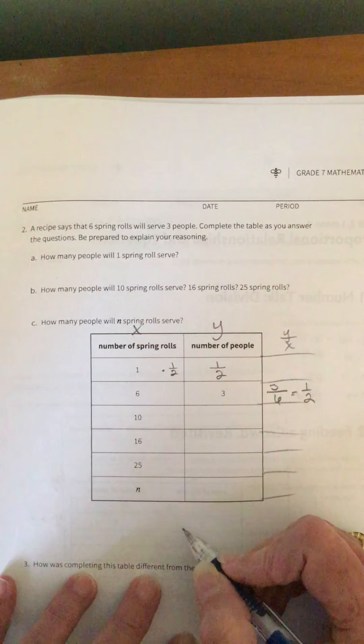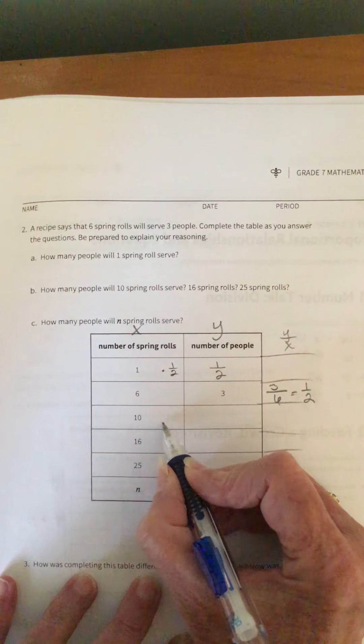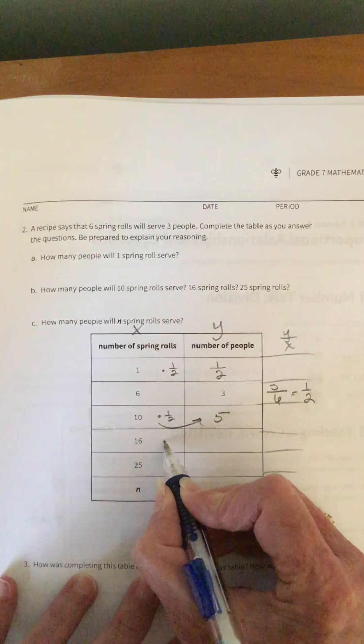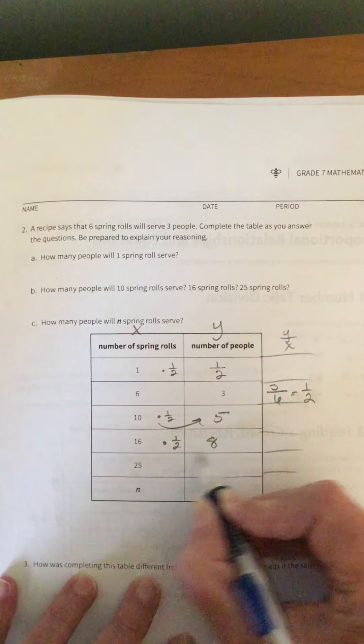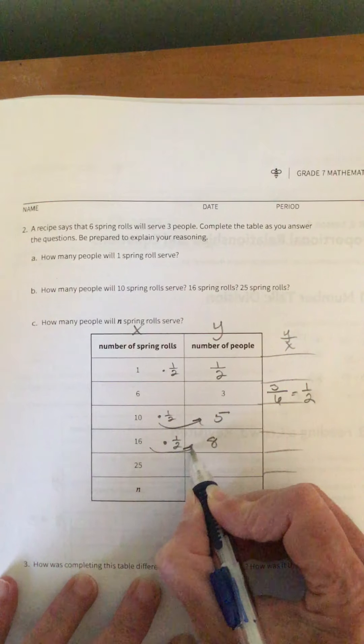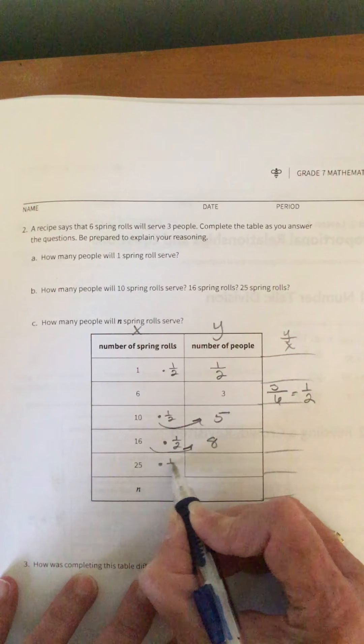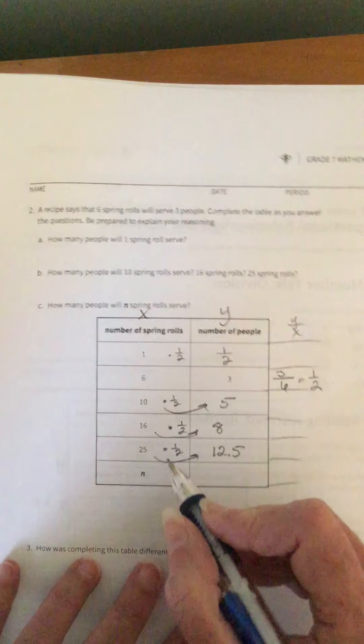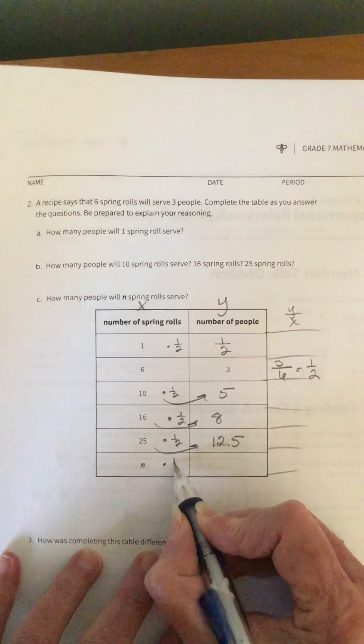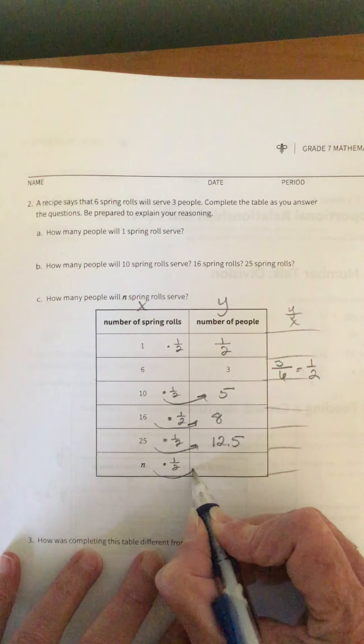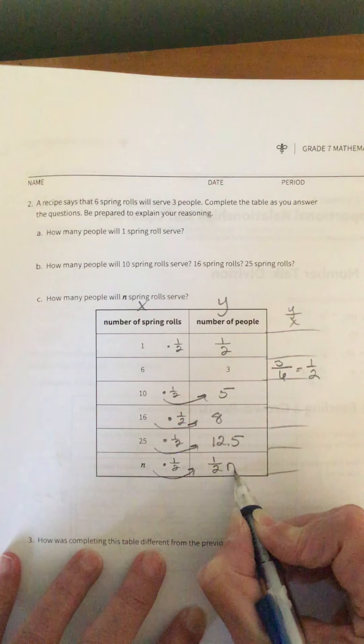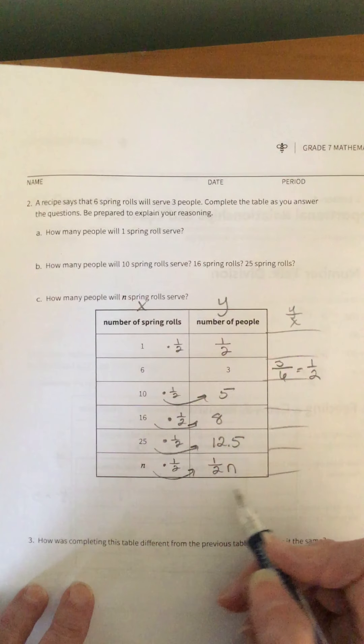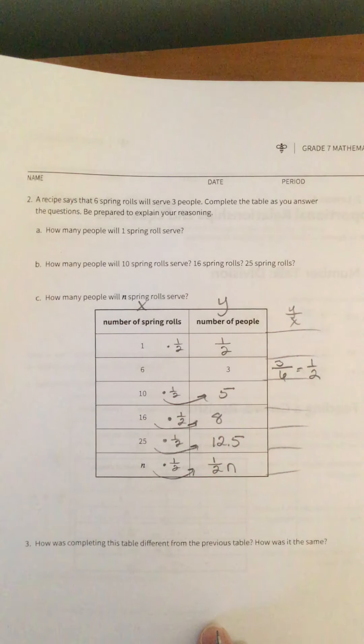Alright, so I'm given this relationship right here. So Y over X is going to give me 1 half. So that means my constant of proportionality is 1 half. So I'm going to multiply each one of these by 1 half. So half a person is 1 spring roll, 10 people times 1 half is going to give me 5 people. 16 gives me 8 people, 25 times 1 half is going to give me 12 and a half people. And N number of people, any number of people, I'm going to multiply it by 1 half, so that's going to give me 1 half N. So how many people will N spring roll serve? 1 half times N.